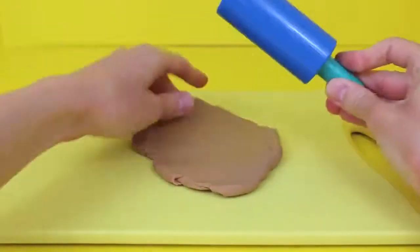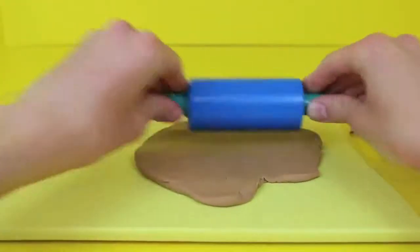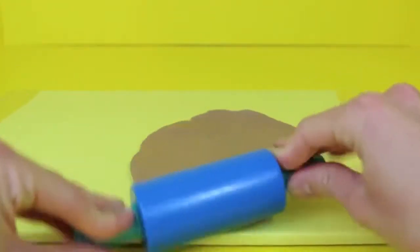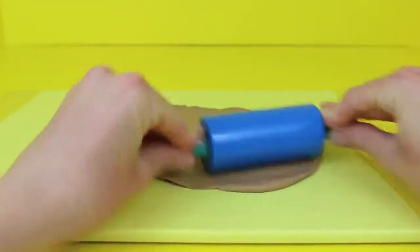Next I'm going to roll out some of this brown Play-Doh to act as the breading on the corn dog. Real corn dogs are breaded in a corn meal batter and then fried but since this is just Play-Doh I'm going to just roll out this brown Play-Doh.